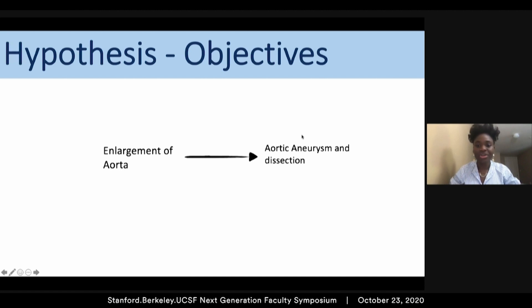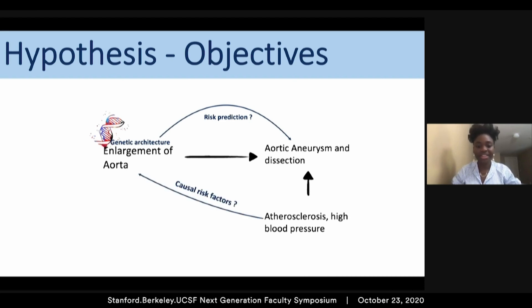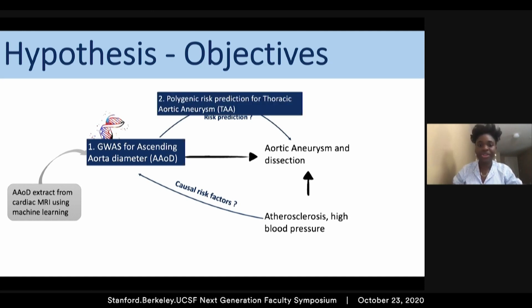We know that enlargement of the aorta can lead to aortic aneurysm and dissection. So the hypothesis is that the genetic architecture of aorta diameter may help predict the risk of aortic aneurysm. We also know that atherosclerosis and high blood pressure are risk factors, so we wondered whether these factors are causally related to enlargement of the aorta. We aimed to study the genetic architecture of aorta diameter by conducting a GWAS, develop a polygenic risk score to predict the risk of thoracic aortic aneurysm, and use a Mendelian randomization approach to study causal relationships between aortic aneurysm risk factors and aorta enlargement.